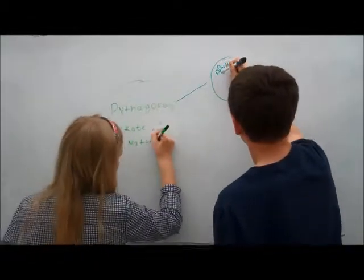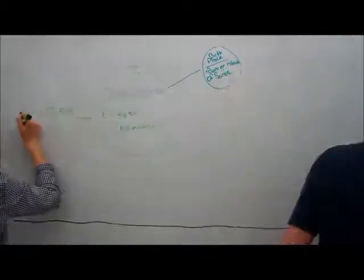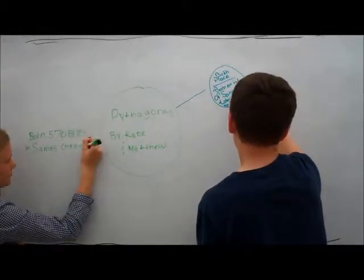Pythagoras by Kate and Matthew. Pythagoras was born on the Greek island of Samos. He was raised there, but because of a change in power, he moved to Italy.